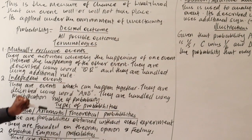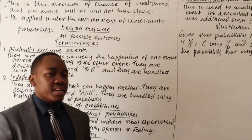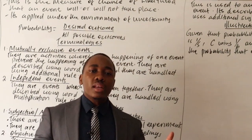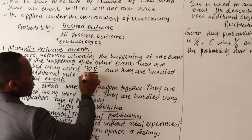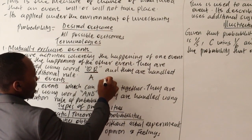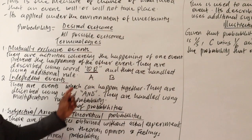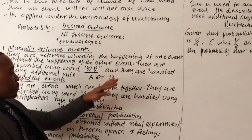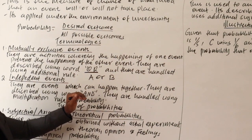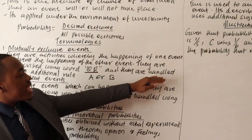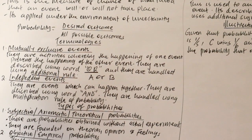The major terminology we have is mutually exclusive events. Mutually exclusive events are events whereby the happening of one event prohibits the happening of the other event. They are described using the word 'or.' For example, if we have two events A and B that are mutually exclusive, it's either A or B, but not A and B together. They are handled using the addition rule of probability.